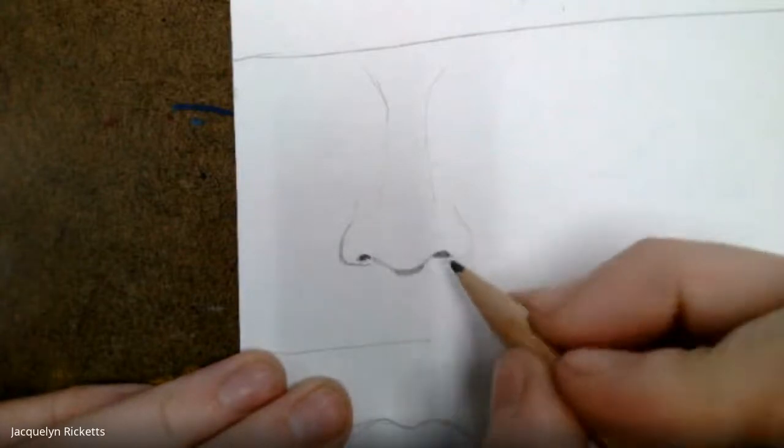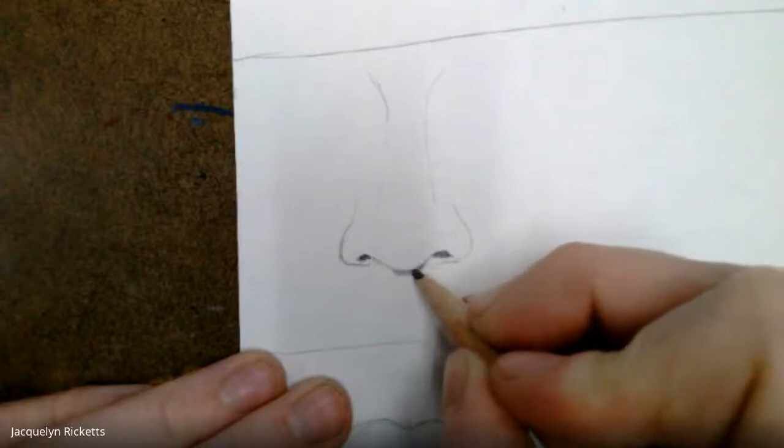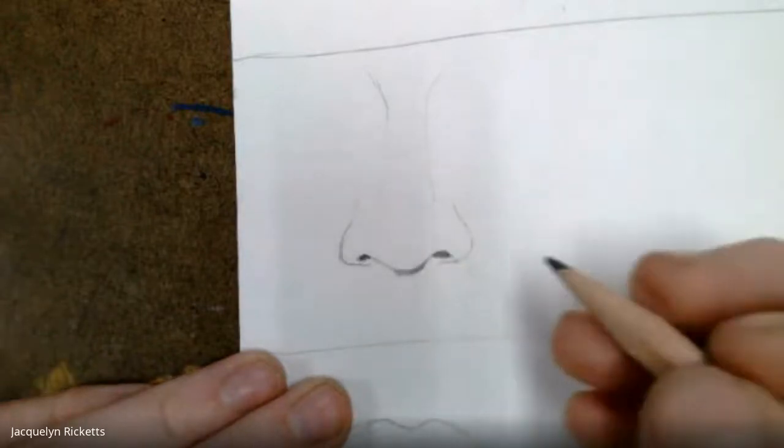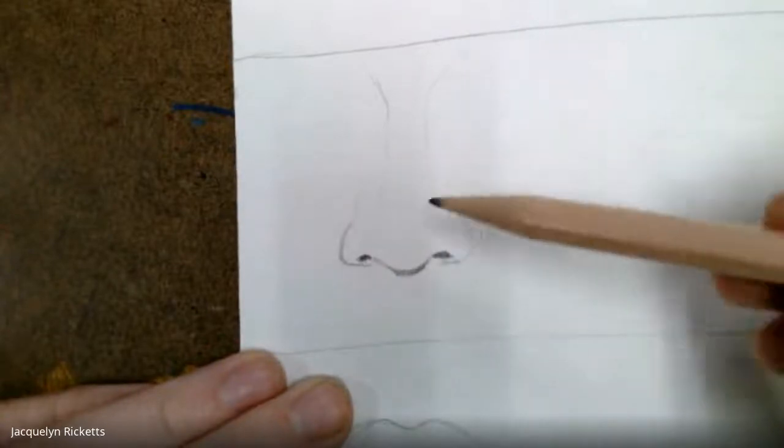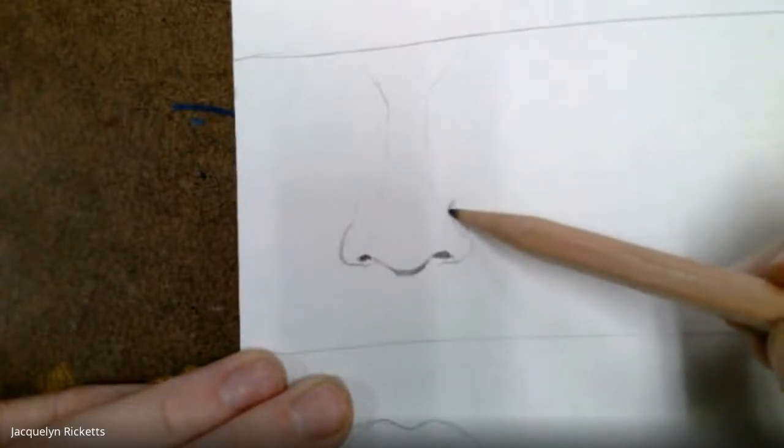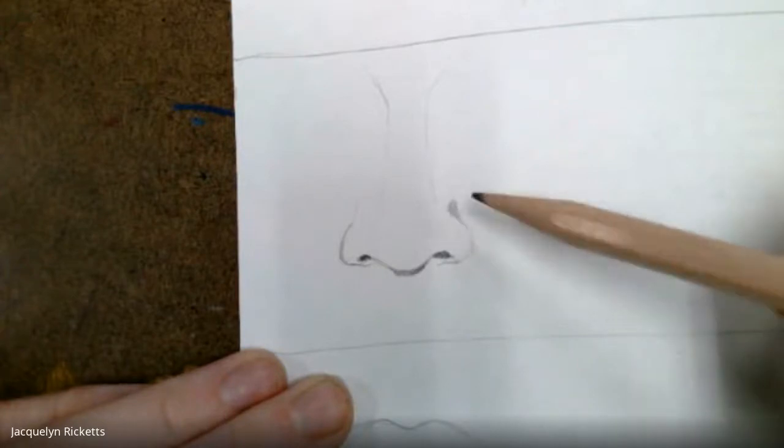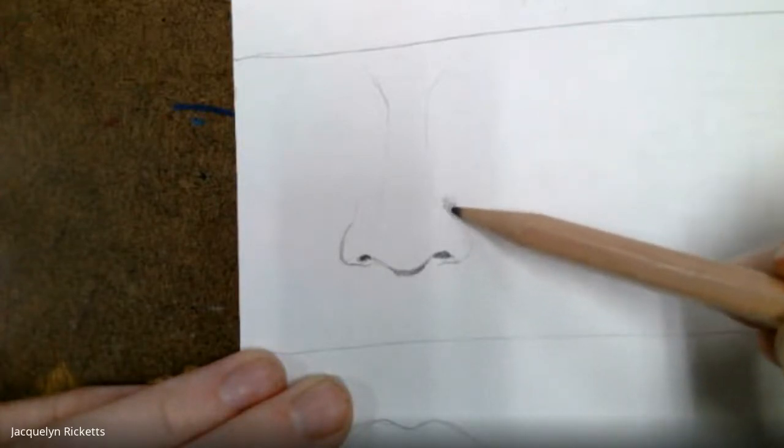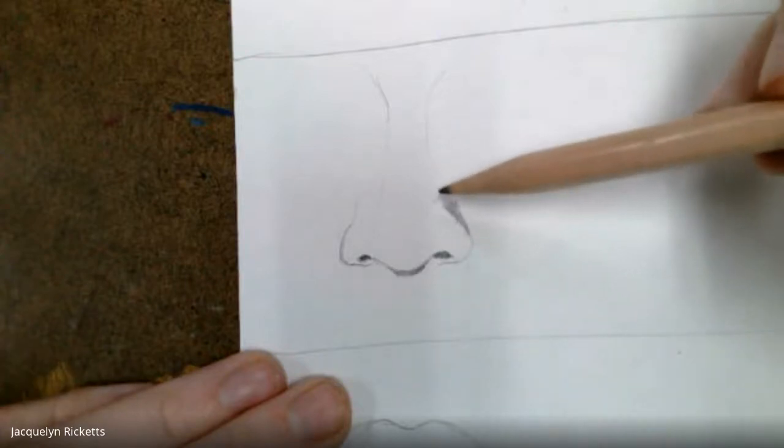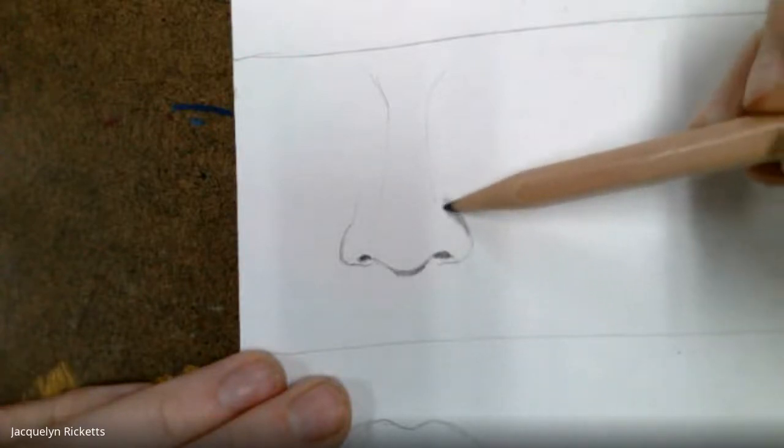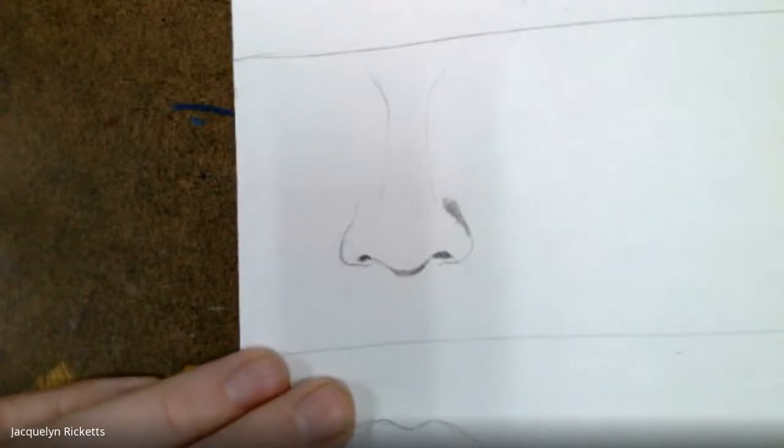I'm going over that area trying to get it about the value that I want it to be because this is where a shadow is. Usually I notice it's easier when I'm doing skin to kind of go in and layer my pencil to make it darker. I'm just gonna slowly and slowly make this area a little bit darker.